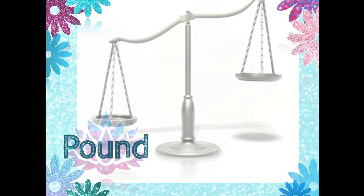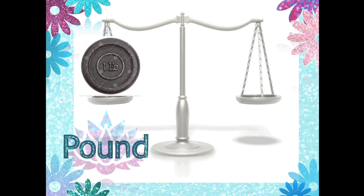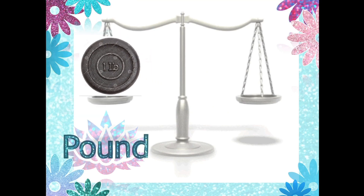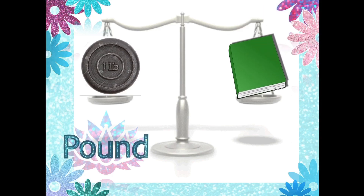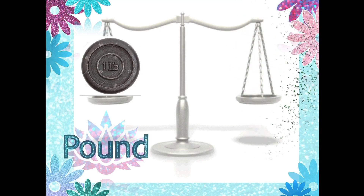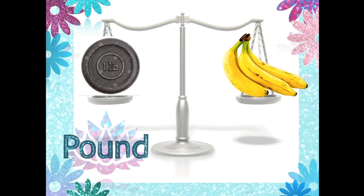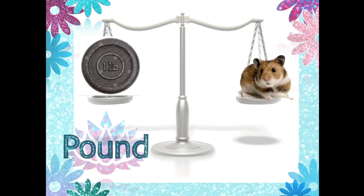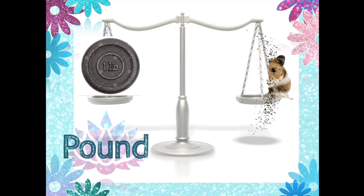The next unit is the pound. For the pound unit I will use the same scale but different weights. This is one LB, which means one pound. On the other side I will put this book — this book is almost equal to one pound. Also I have these three pieces of banana — they are equal to one pound. Do you see this small hamster? This cute hamster is almost equal to one pound.